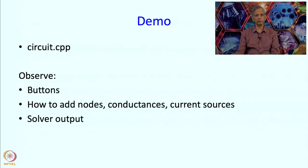When we run this program, there are buttons that enable you to add nodes, conductances, and current sources. The buttons also allow you to solve the circuit, and I'd like you to observe the solver output. Conductance is the inverse of resistance — these are just two terms for the parameter of a circuit component. It makes more sense to talk in terms of conductance rather than resistance, which is why we will be using that term.